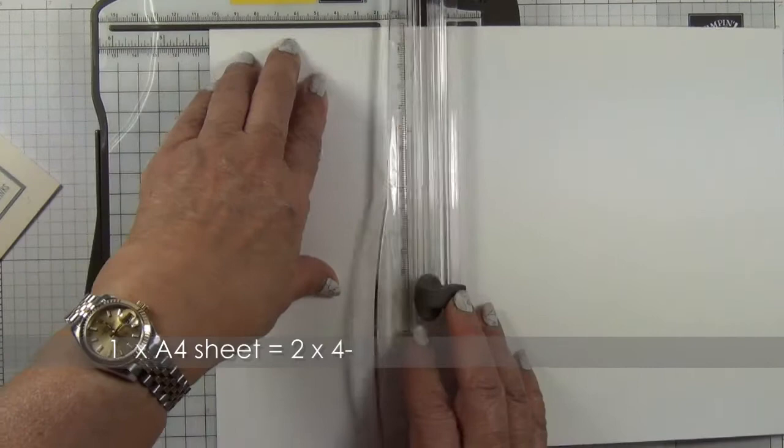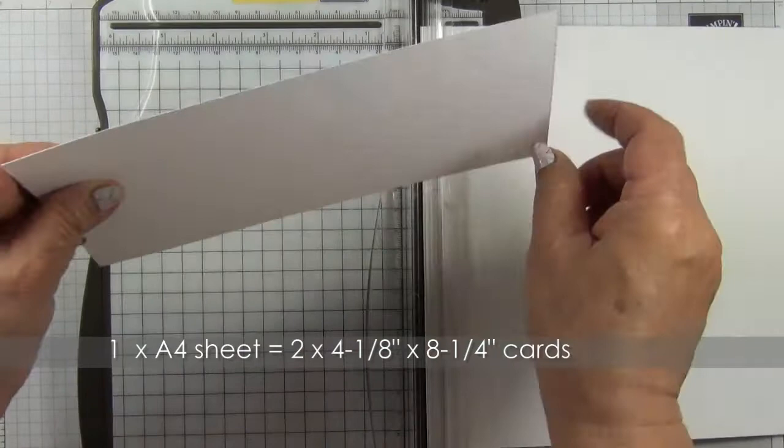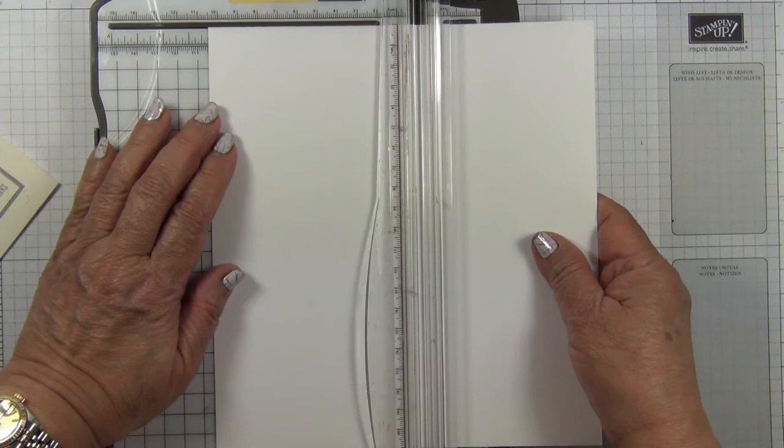You can get two cards out of one sheet, so measure that at four and one eighth. This is a European A4 size, so you can get two out of an A4 sheet.